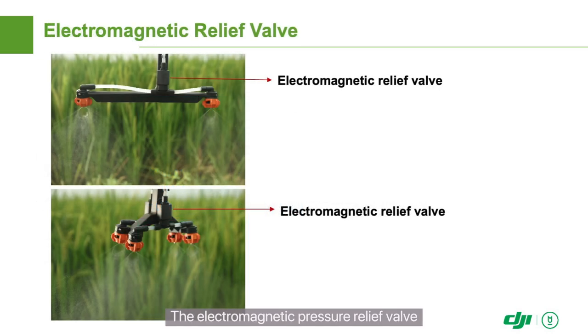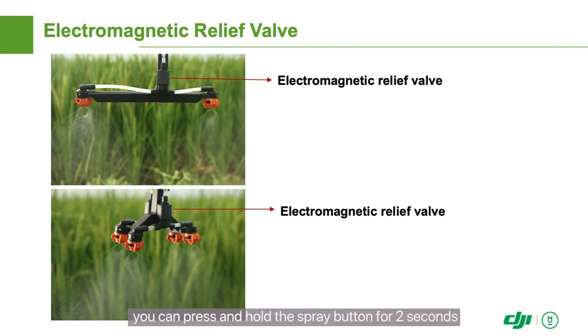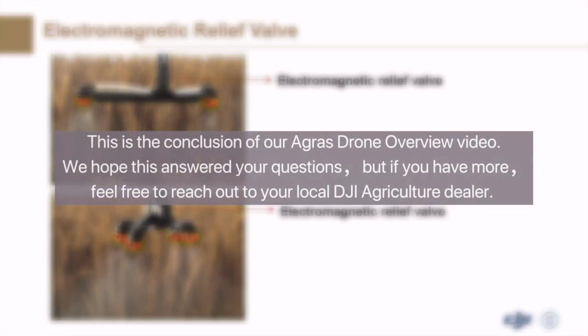The electromagnetic pressure relief valve is a component that opens and closes each nozzle. Generally, you can press and hold the spray button for 2 seconds to discharge the air before the operation. This concludes our Agris drone overview video. We hope this answered your questions, but if you have more, feel free to reach out to your local DJI agriculture dealer.